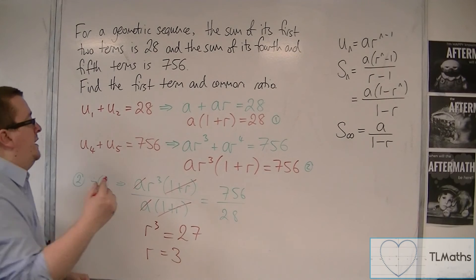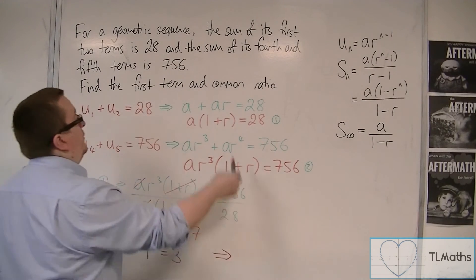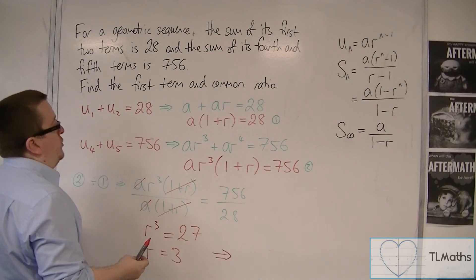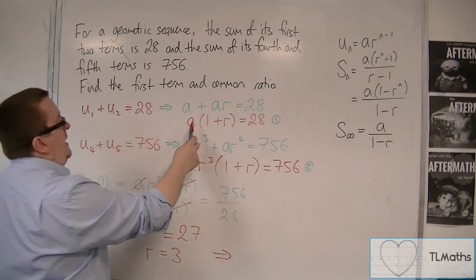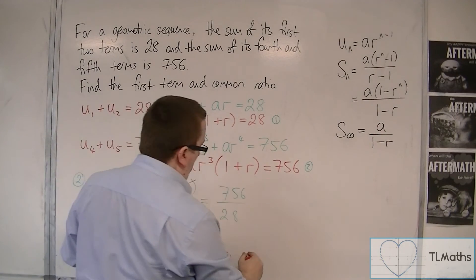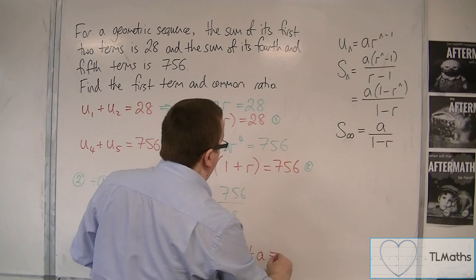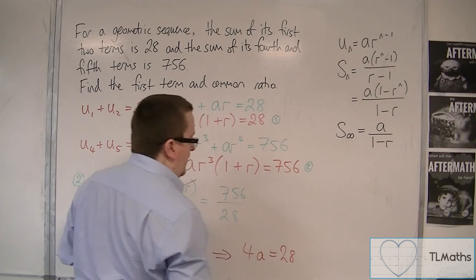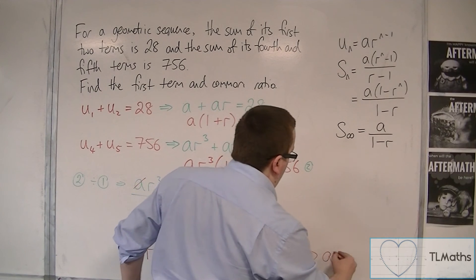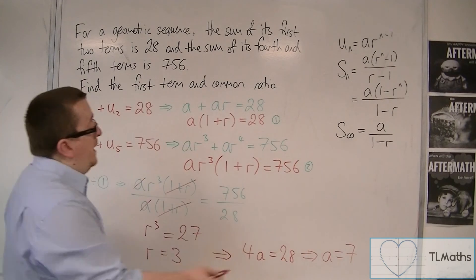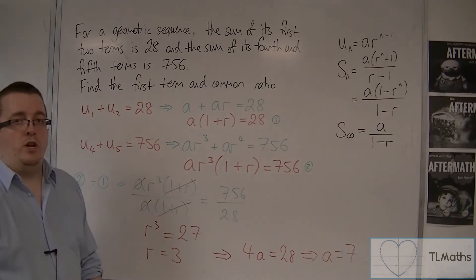We can then substitute r = 3 into the first equation. So a times (1 + r) gives us 4a = 28, and so a = 7. So I've found the first term and the common ratio.